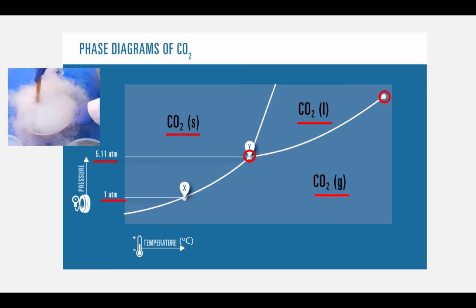Another thing to notice about the carbon dioxide phase diagram is the solid-liquid line has a positive slope. This is because carbon dioxide has weak intermolecular forces, since it's a non-polar molecule.